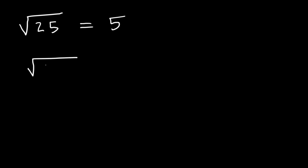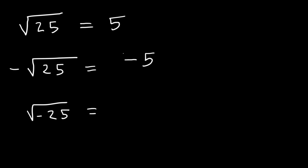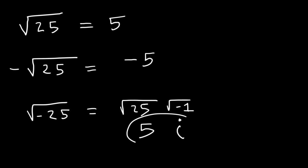Now what about negative square root of 25 and the square root of negative 25? What's the answer for these? We know the square root of 25 is 5, and there's a negative in front, so it's negative 5. And if you have a negative on the inside, just keep in mind that the square root of negative 1 is the imaginary number i. So this is going to be 5i.